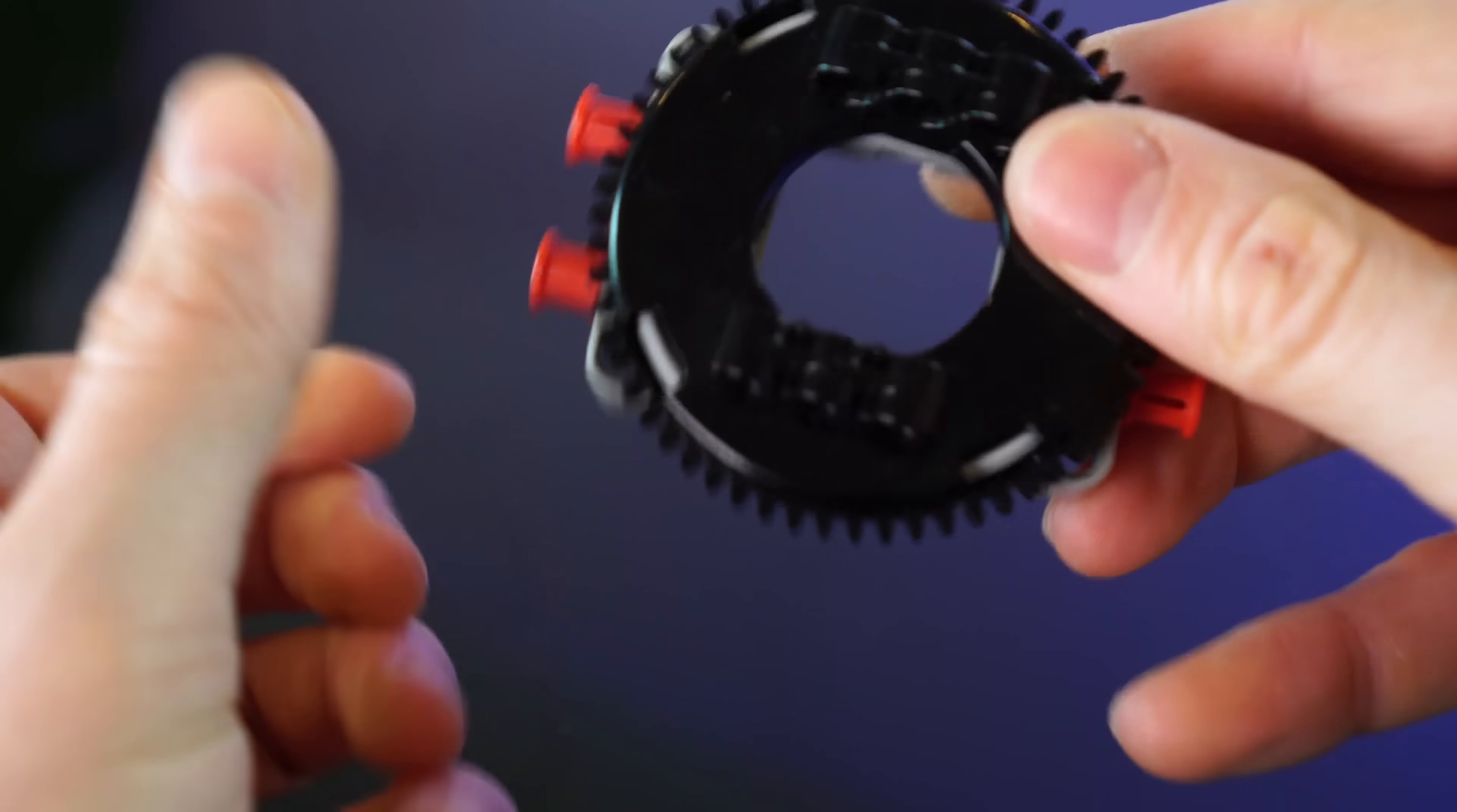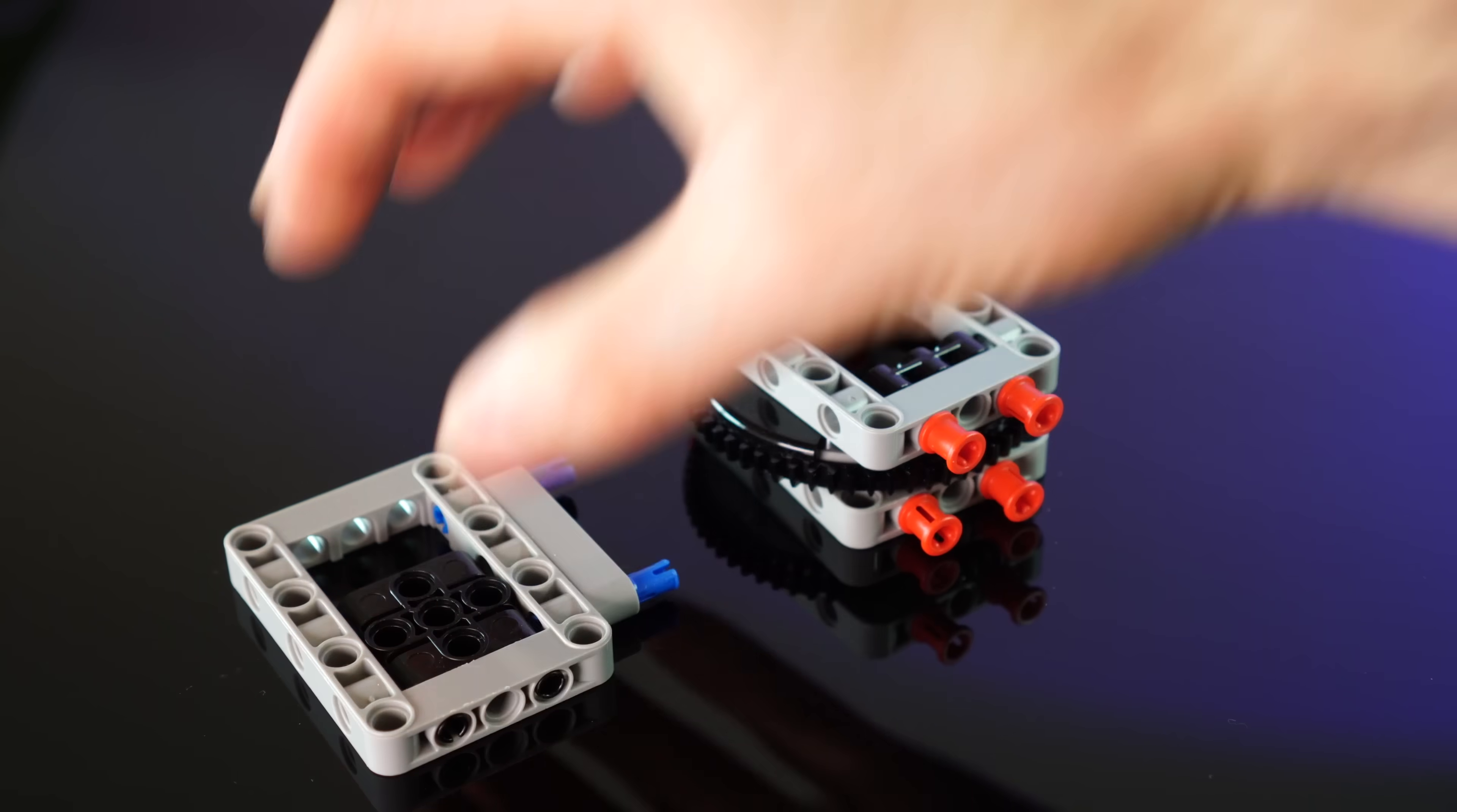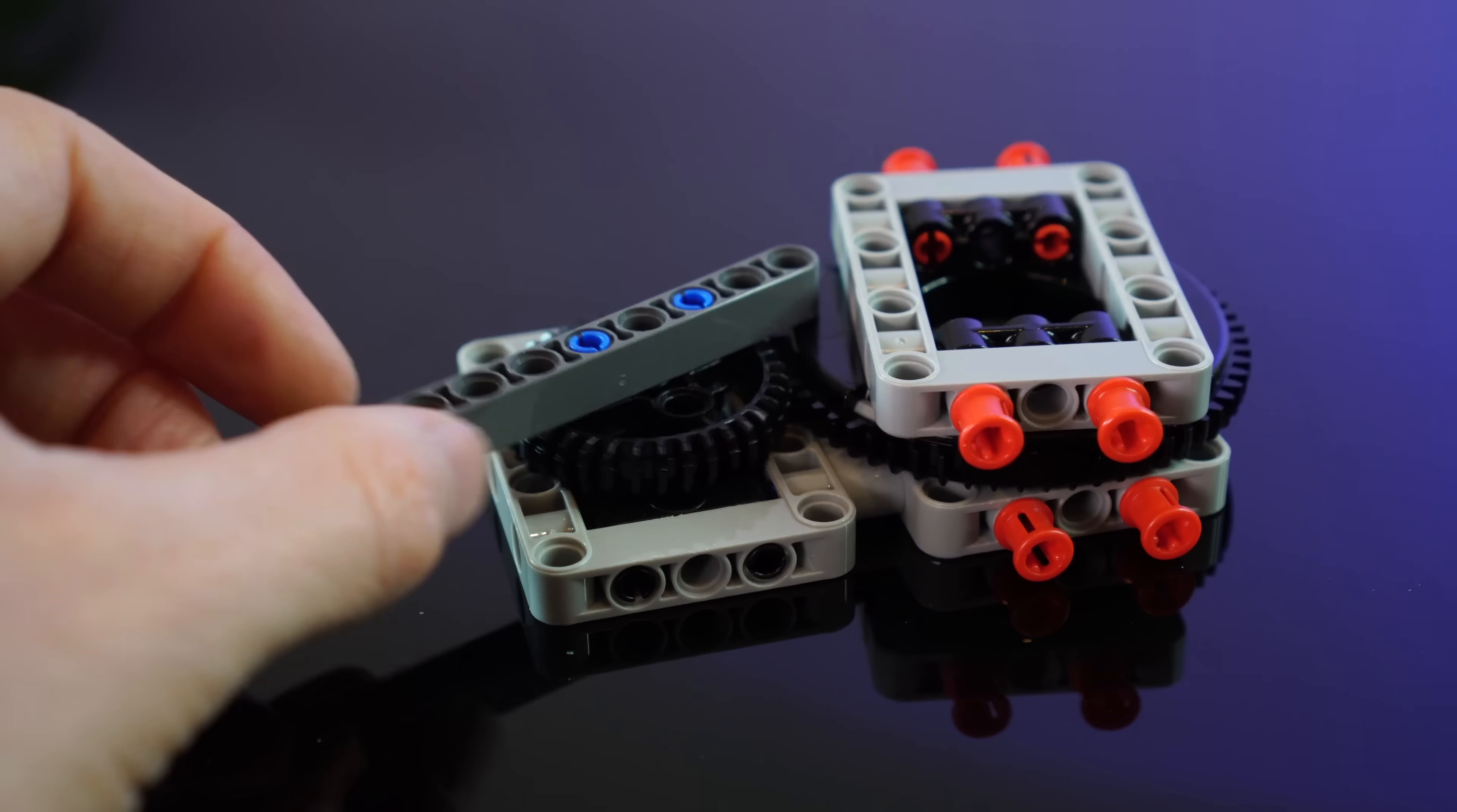I want this fan to oscillate just a little, not as much as a regular fan but just enough to circulate the air a bit. So this turntable should serve as a stable point from which we can mount the fan. And if we wiggle this gear around we get an oscillating motion.